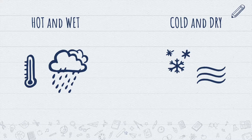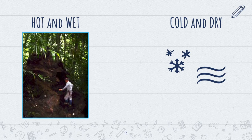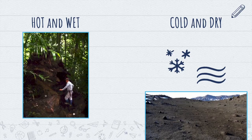Temperature and moisture play a major role. Soils in a hot and wet climate typically form and age faster than soils in cold and dry climates. An area that is hot and wet could be a rainforest and may have a soil that looks something like this, while areas that are cold and dry may have a soil that looks a little bit more like this.